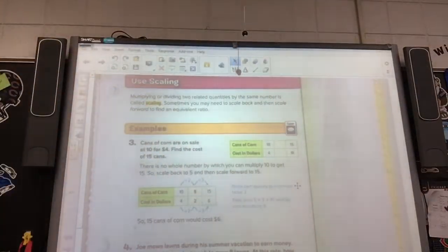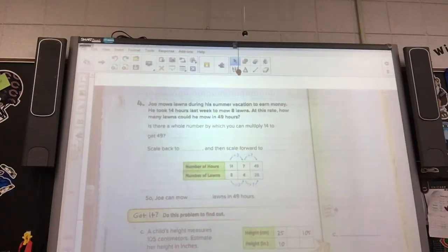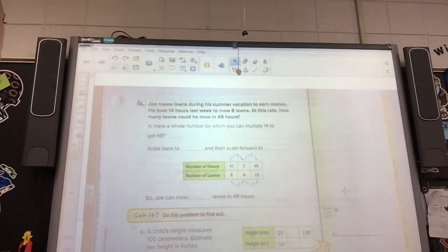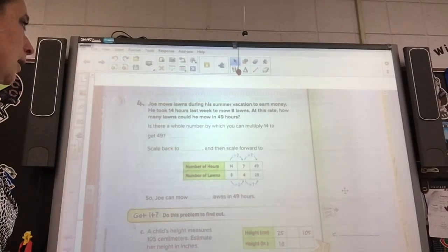And we're going to look at Joe here. Okay. So this is down here. I just had to move it because I didn't have enough room on my smart board. Joe mows lawns during the summer vacation to earn money. He took 14 hours last week to mow 8 yards. At this rate, how many lawns will he mow in 49 hours?